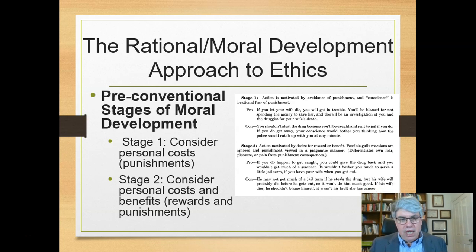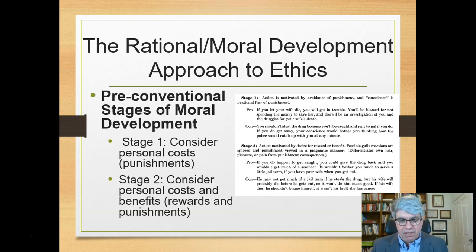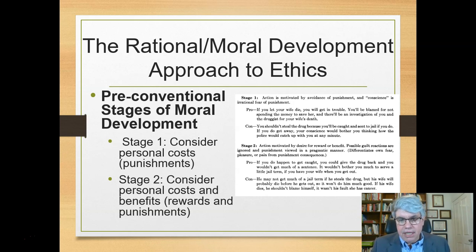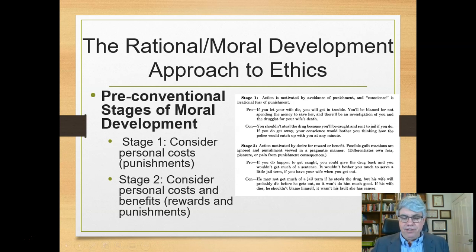Stage two is where you consider the personal costs and benefits — the rewards. A reason for stealing the drug would be: if you get caught, you could give the drug back and wouldn't get much of a sentence, and it wouldn't bother you much to serve a little jail term if you have your wife when you get out. Or, you might not steal it because your wife will probably die before you get out of jail, so it won't do you much good. That's an example of stage two reasoning.